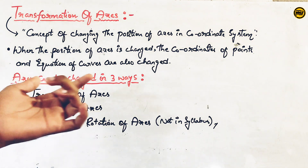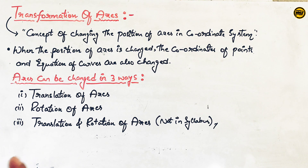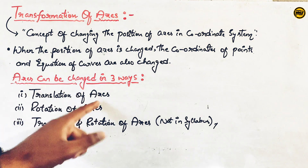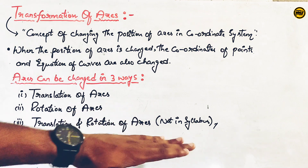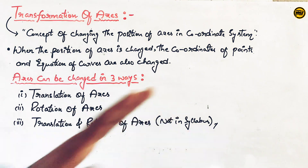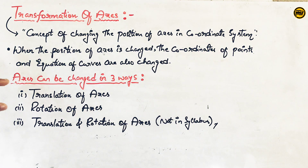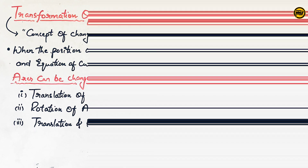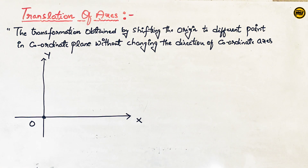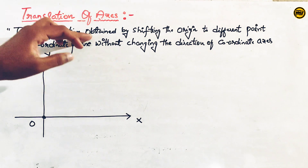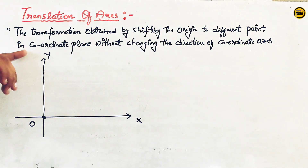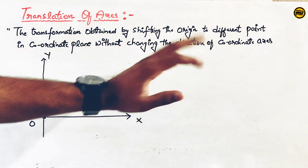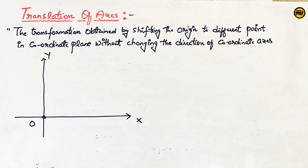We change the axis in three ways: firstly, translation of axis; secondly, rotation of axis; and thirdly, translation and rotation of axis. The transformation obtained by shifting the origin to a different point in the coordinate plane without changing the direction of the coordinate axis.